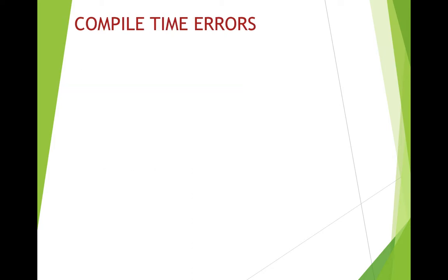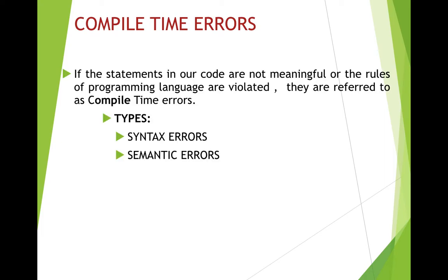Let's begin with compile-time errors. If the statements in our code are not meaningful or the rules of the programming language are violated, they are referred to as compile-time errors. For example, you might unintentionally use a plus symbol instead of an equals sign, or forget a quotation symbol. If your statements are not meaningful enough, the type of error you get is a compile-time error. There are two categories: syntax errors and semantic errors.